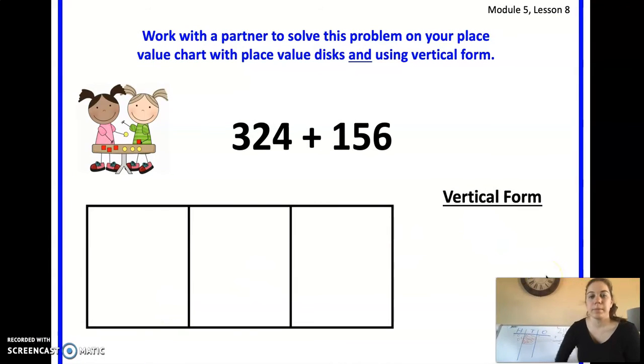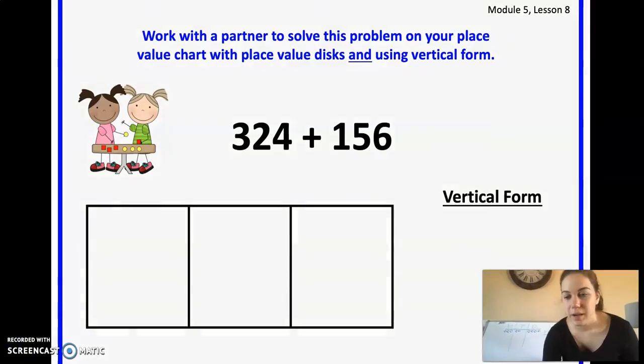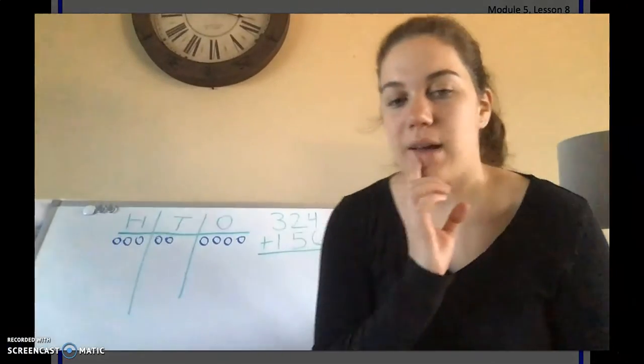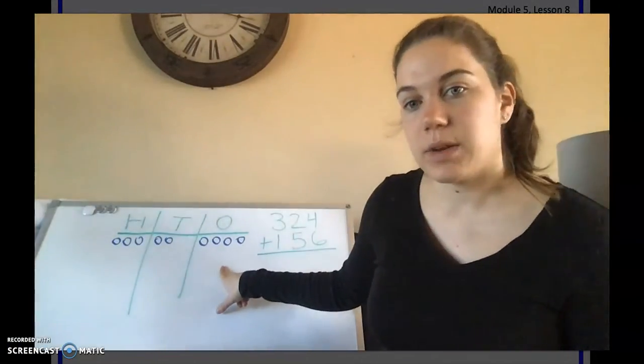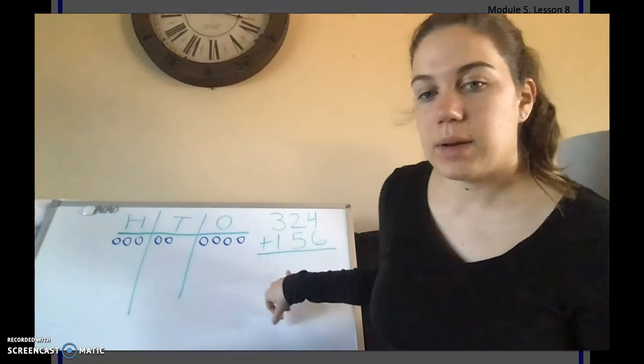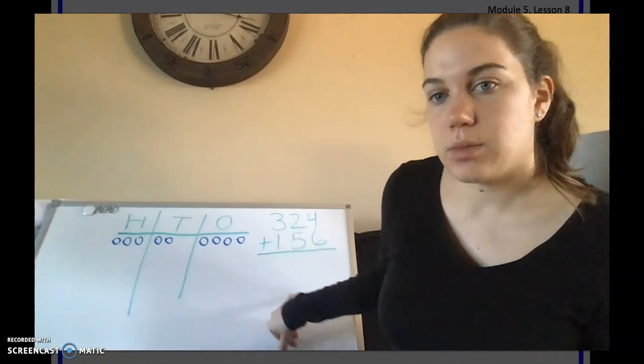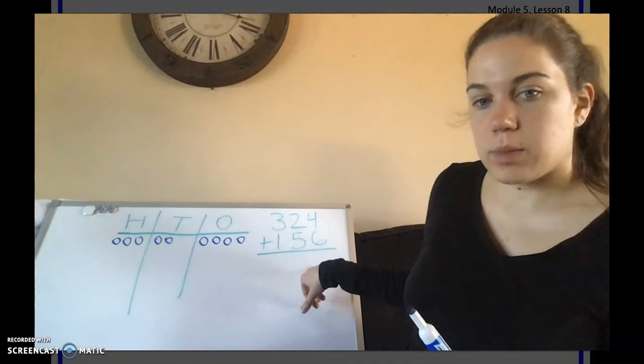We have 1 more problem. I want you to try and do this one on your own. And when you're ready, you will come back and check your work with mine. Alright. So I have already done my 324. I put on my place value chart. So now I need to add my 156. Remember, we start in our ones column. So we have our 4. Now we have to add 6 more to it.